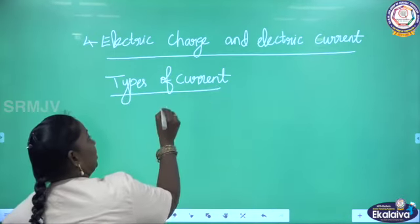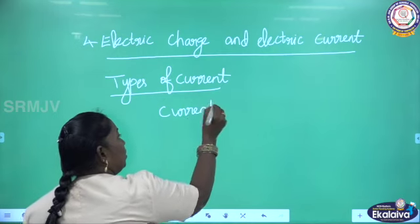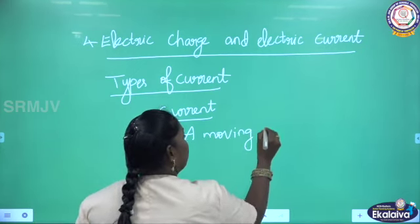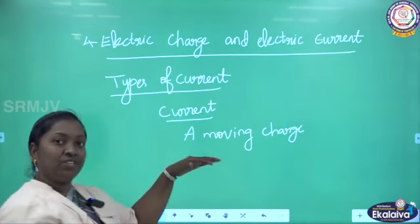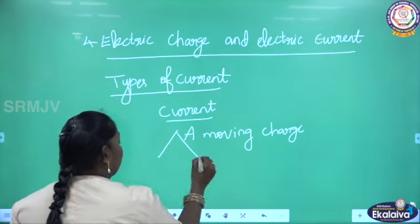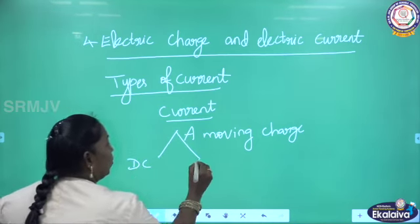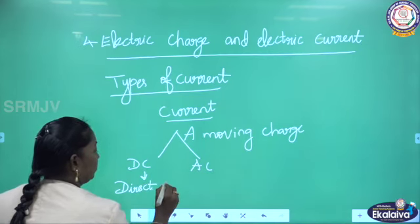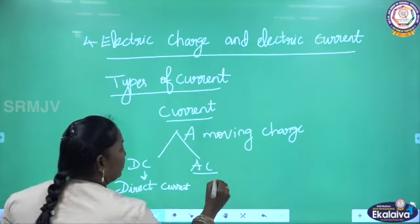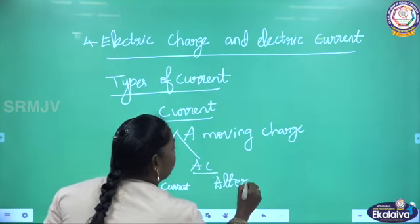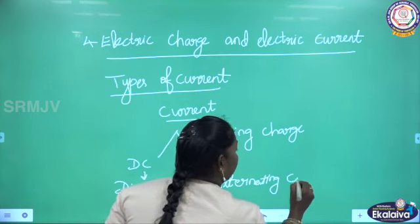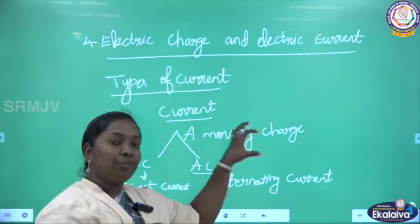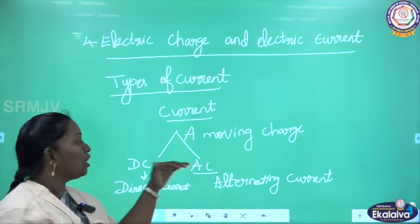Before we start, we should know what current is. We have already discussed how current is produced — a moving charge or electric charge will produce current. This current is divided into two types: one is DC, which means direct current, and the other is AC, which means alternating current.